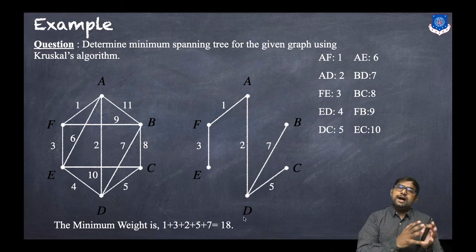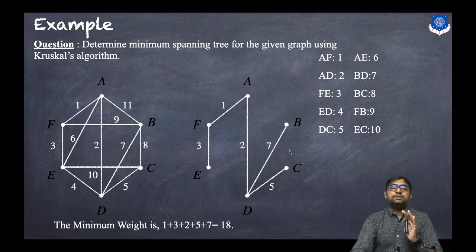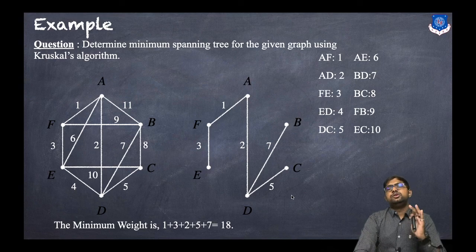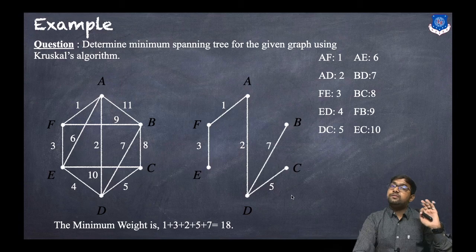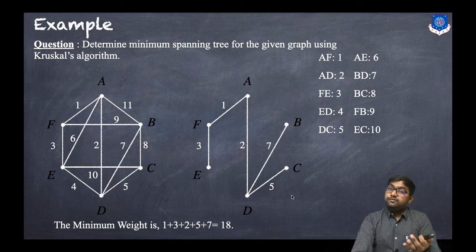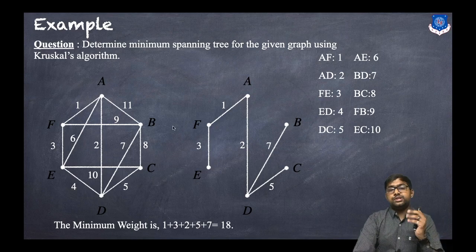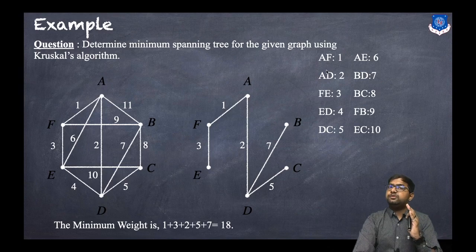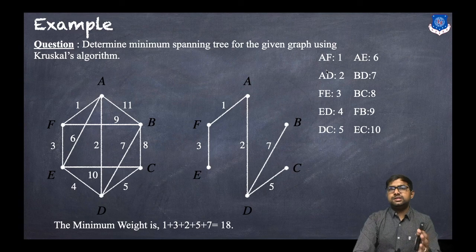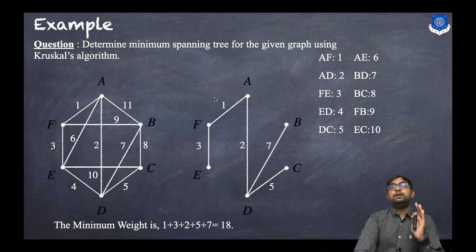If you remember the previous session on Prim's algorithm, the answer was the same — 18 — with the same graph. However, this won't always be the case; it is possible that Prim's and Kruskal's algorithms yield different spanning trees for the same graph. Also, if two or more edges have the same weight, you can choose any of them, and the answer will vary accordingly. This is how you find a minimum spanning tree using Kruskal's algorithm. Thank you.